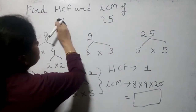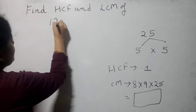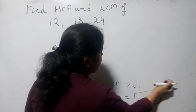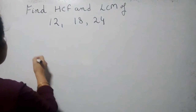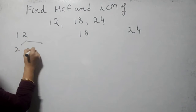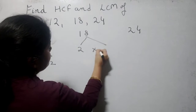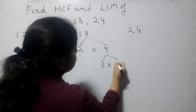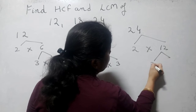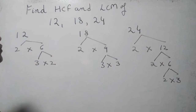For example, we have the data 12, 18, and 24. I am just taking these samples to explain. First, find out the factor trees for 12, 18, and 24. For 12, we have 2 into 6, then 3 into 2. For 18, we have 2 into 9, then 3 into 3. For 24, we have 2 into 12, then 2 into 6, then 2 into 3. First, make the factor tree for all the given numbers.